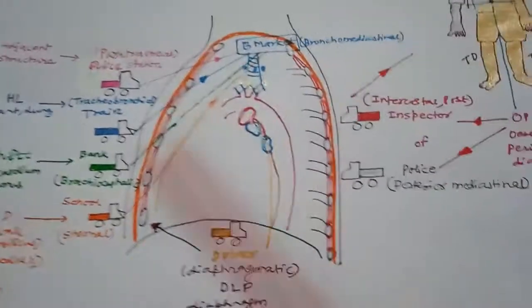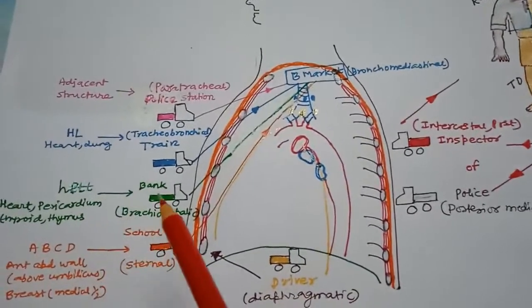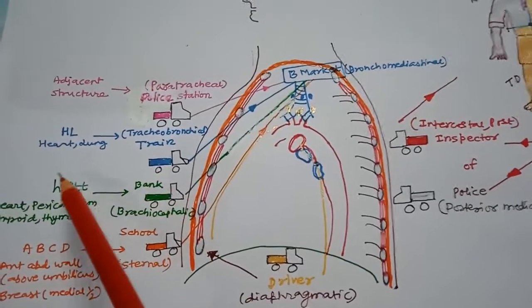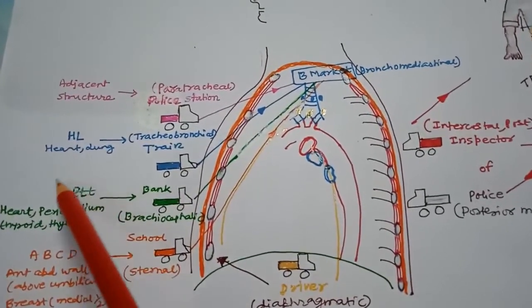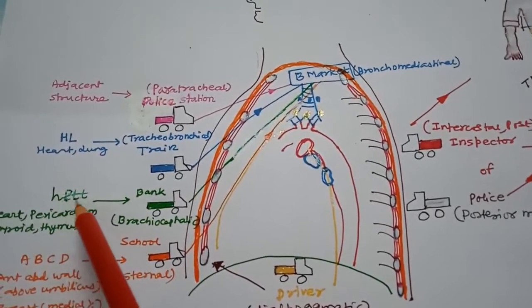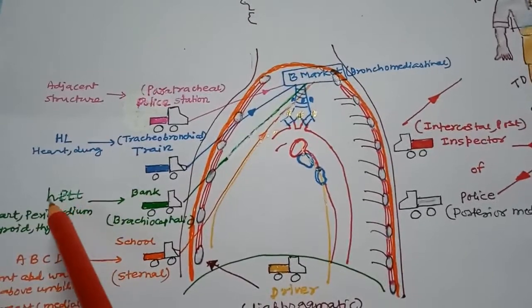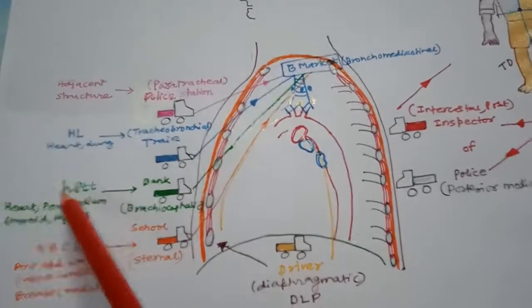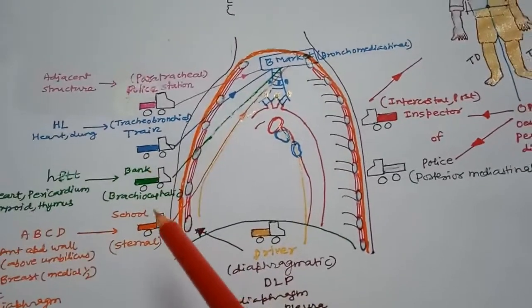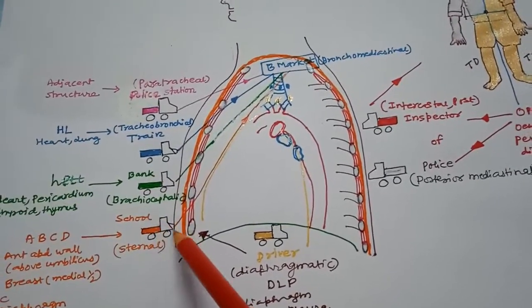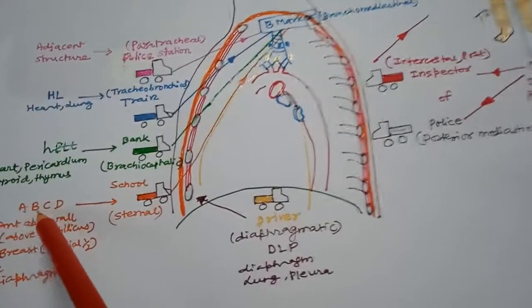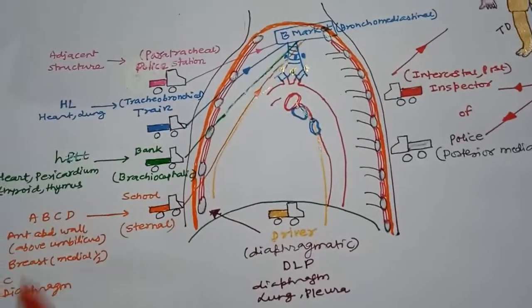The third garbage truck, coming from the bank, collects from structures remembered by the computer eponym HPTT: H for heart, P for pericardium, T for thyroid, and T for thymus. The fourth garbage truck, coming from school or the external/paratracheal node, uses the mnemonic ABCD: A for anterior abdominal wall above the umbilicus.